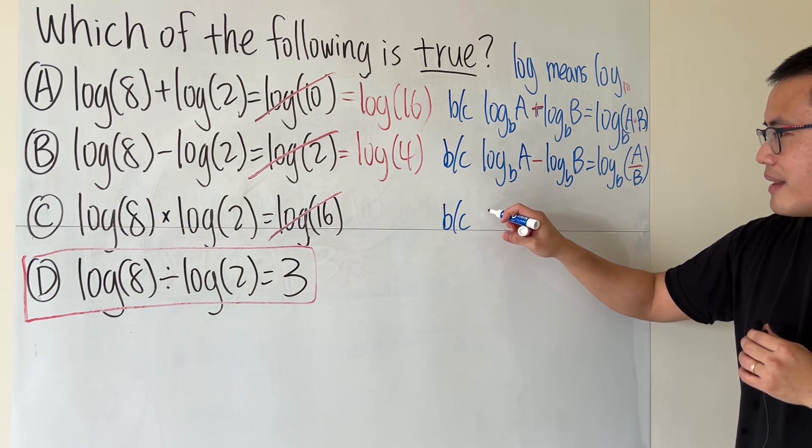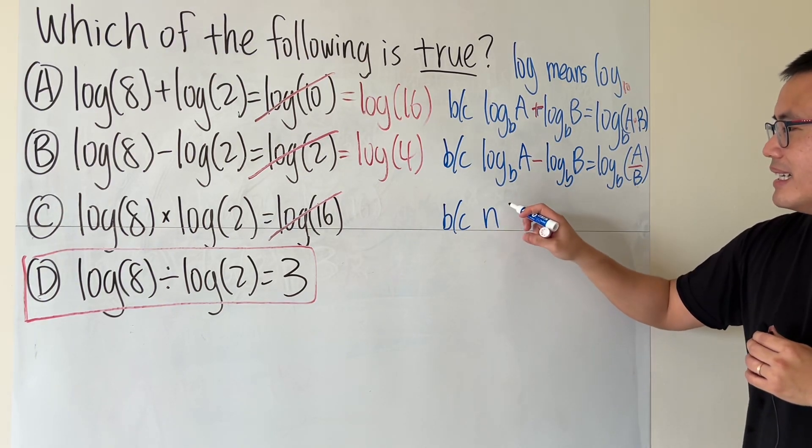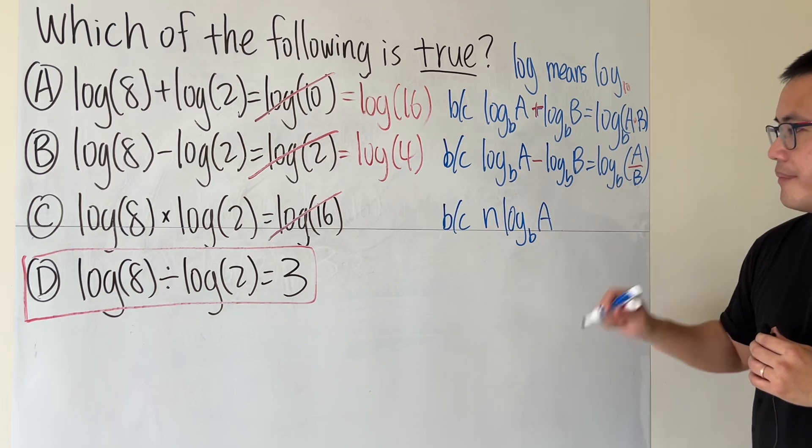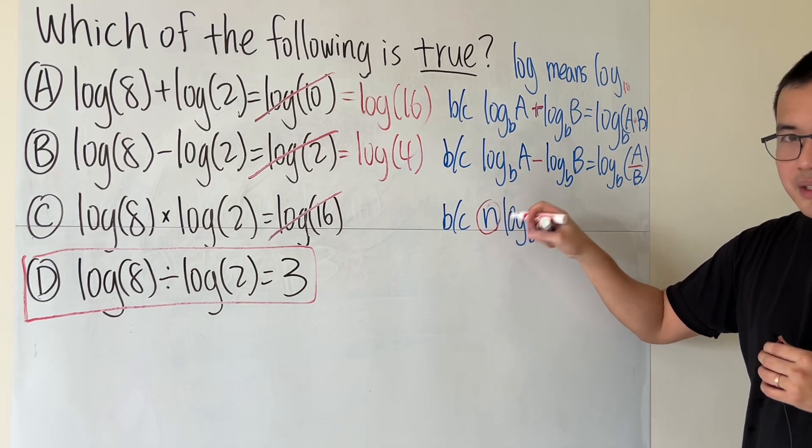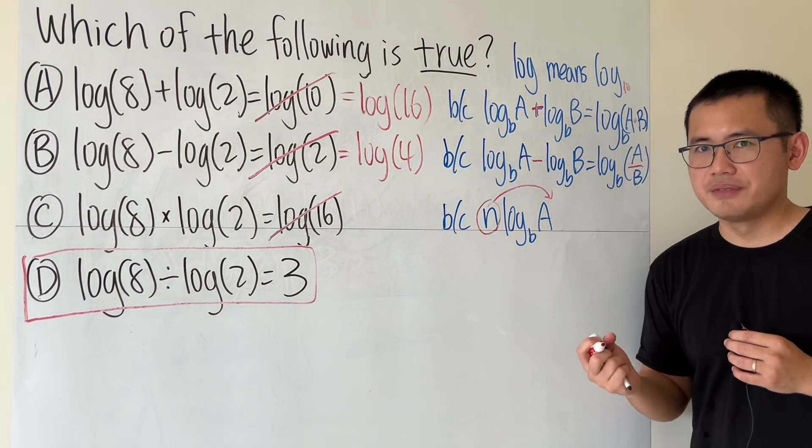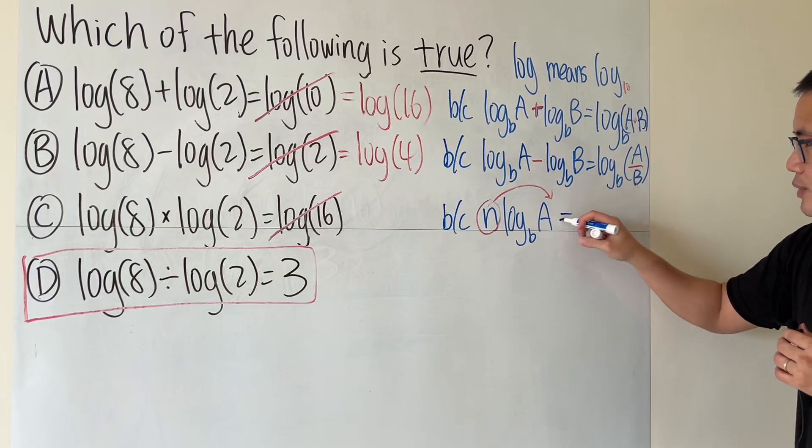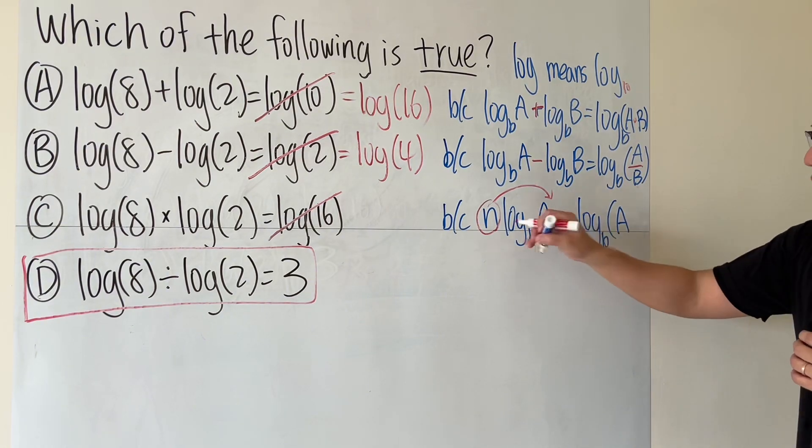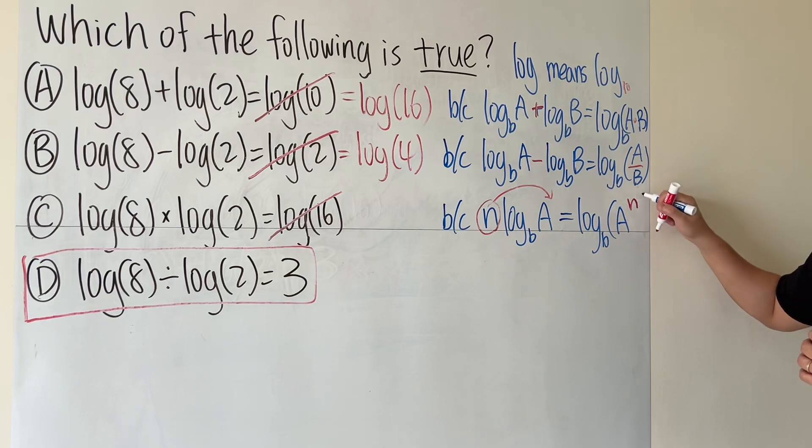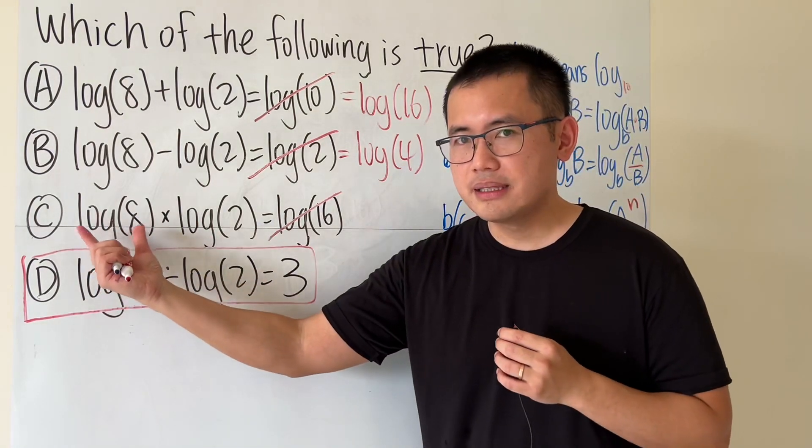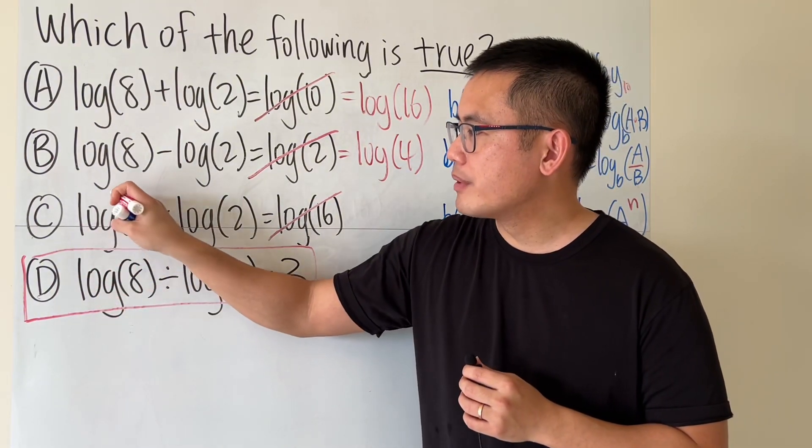I will write this down first. When we have something inside in front, let's say some number n, times log base b of a, we can put this up here and make that into an exponent instead. So this becomes log base b of a raised to the nth power. In this case, if you treat this as the coefficient, you can put this number up here.